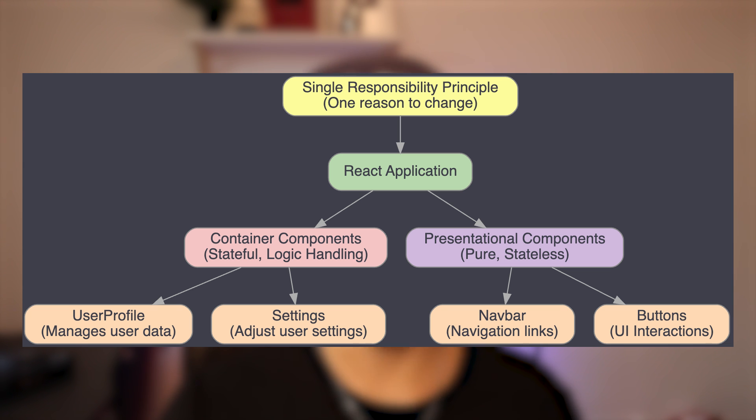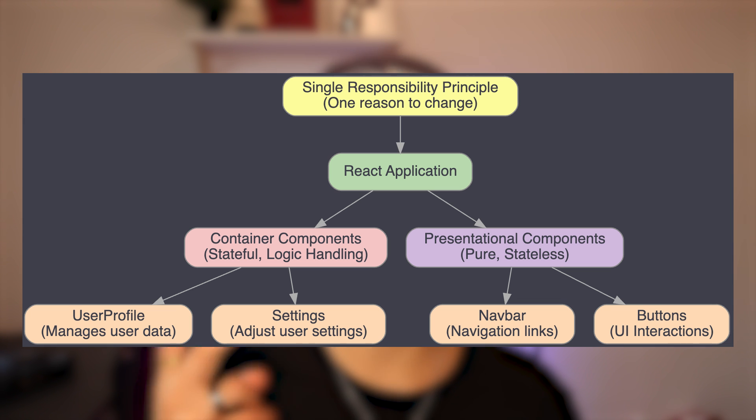Containers, or smart components, are concerned with how things work — that includes data fetching, managing state, and doing complex operations. Presentational, or dumb, components focus on how things look, relying purely on the data they receive from props. Understanding and practicing this single principle will exponentially improve the code you write in React and make your architecture better. The reason for that comes down to one thing: testability — how easily you can test your components.